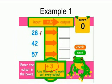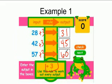And so, because my rule is 3, I'm going to add 3 to each one of these. So 28 plus 3 is 31. 42 plus 3 is 45. And 57 plus 3 is 60.